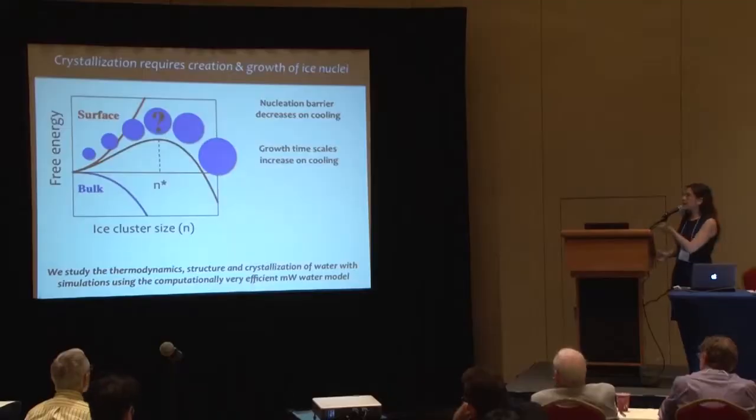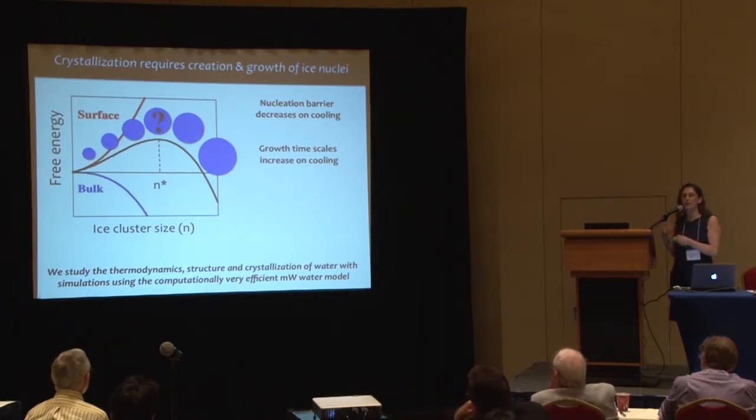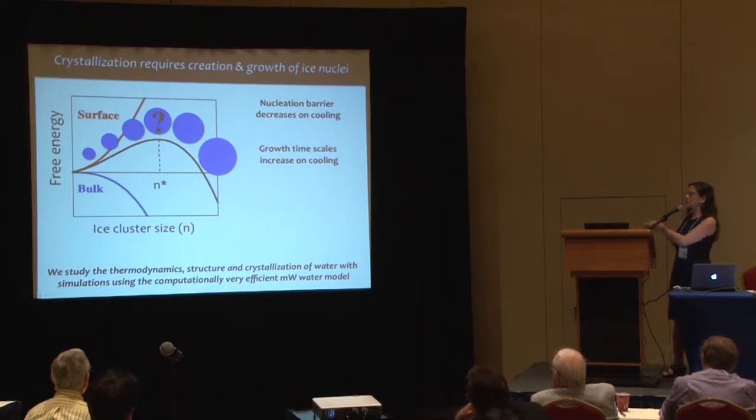To study crystallization at the microscopic level, molecular simulations are a good method. However, crystallization is a rare event — you must form a nucleus of ice out of liquid, which has a big barrier. You form a critical nucleus large enough to roll over and grow the crystal, but this barrier decreases on cooling. So as we cool down, nucleation becomes easier but the growth of ice becomes more difficult due to slowed dynamics.